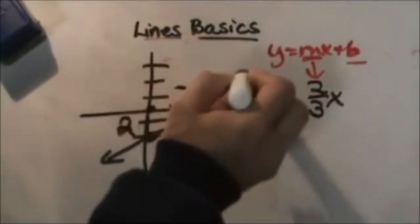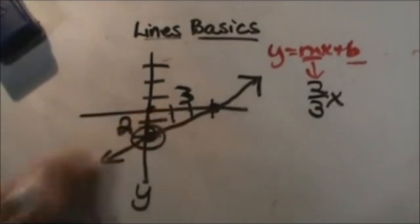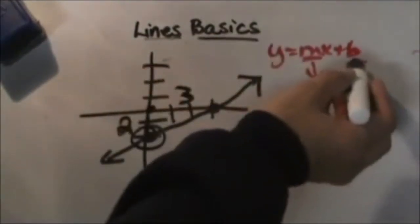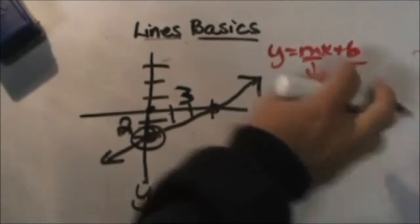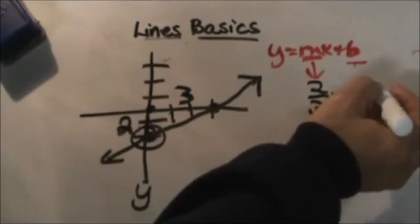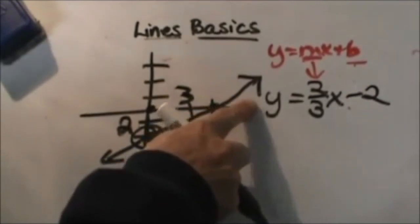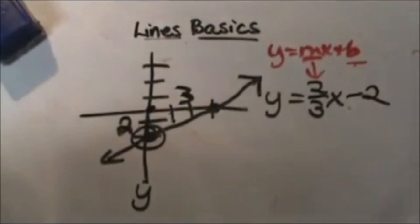Now my intercept, where does this line cross the y axis? Well it crosses right here at 2. So that means my y intercept, or b, is 2, but this time it is not a positive 2. It's below the origin, so it is a negative 2. So my final equation would be y equals 2 thirds x minus 2. There you go. And that's the basics of a linear equation.